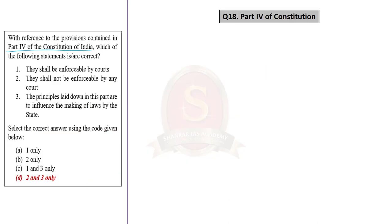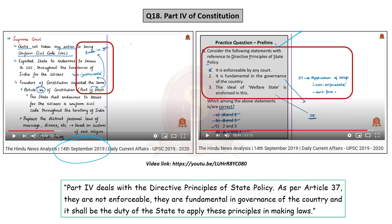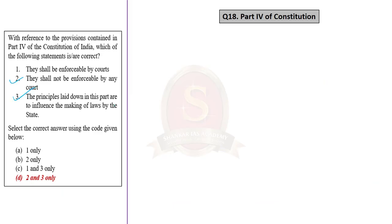This question is about Part 4 of the Indian Constitution — the Directive Principles of State Policy (DPSP). In our daily news analysis on 14th September 2019, we talked about DPSP in both news article analysis and practice questions discussion. We clearly stated that Part 4 deals with directive principles; as per Article 37, they are not enforceable but are fundamental in governance of the country, and it shall be the duty of the state to apply these principles in making laws. With this information, we can easily say that the second and third statements are correct. Therefore, the correct answer is Option D — 2 and 3 only.